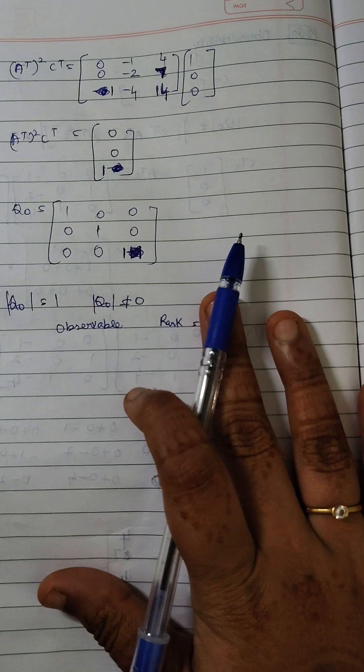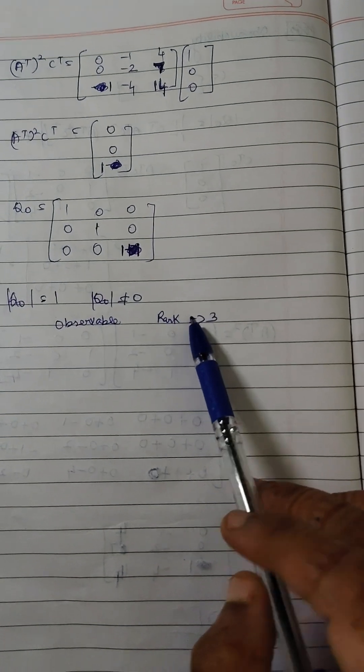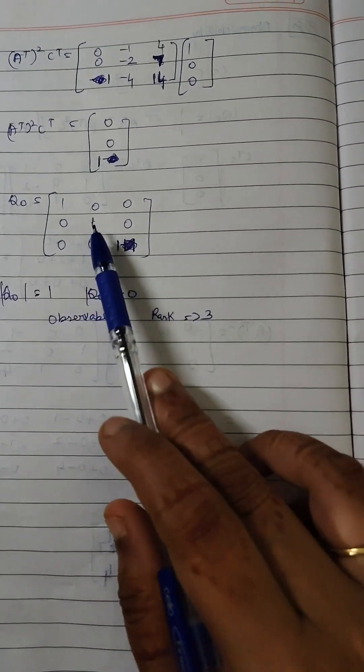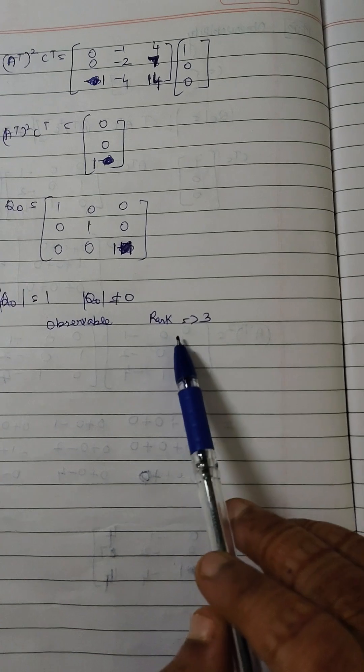So the system is completely observable and regarding the rank, these three are completely independent rows and columns. So the rank is 3.